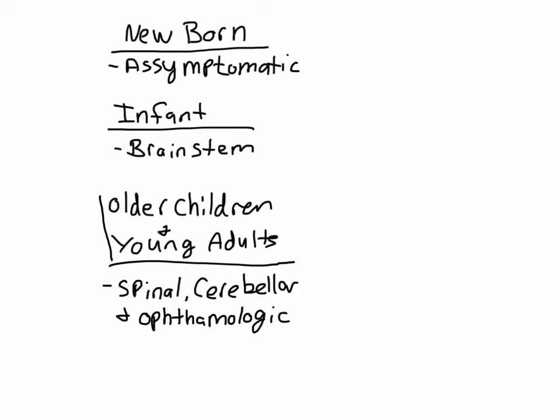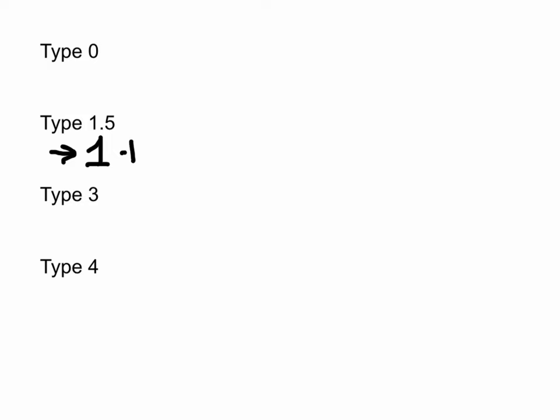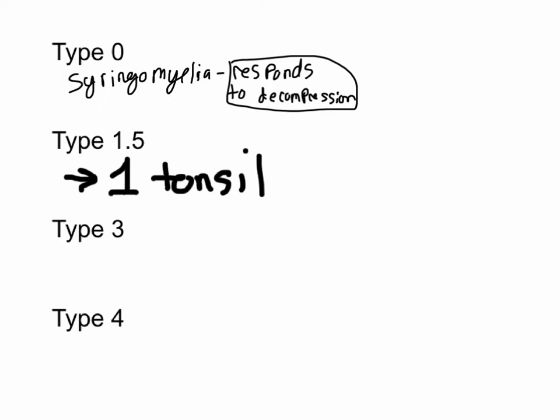Let's quickly cover the Chiari malformation types I haven't discussed. Type 1.5 is the easiest — it's just where you only have one tonsil herniated instead of two, so they call it 1.5. Type 0 is just syringomyelia with no tonsillar herniation, and the syringomyelia must respond to decompression therapy.